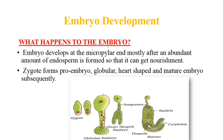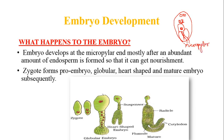Now we will talk about embryo development. Endosperm provides reserve food material in triploid endosperm tissues to support embryo development. Embryo develops at the micropylar end, mostly after an abundant amount of endosperm is formed so that it can get nourishment. The egg cell is fertilized at the micropylar end — where the synergids and egg cell are present — and embryo development also occurs at the micropylar end.